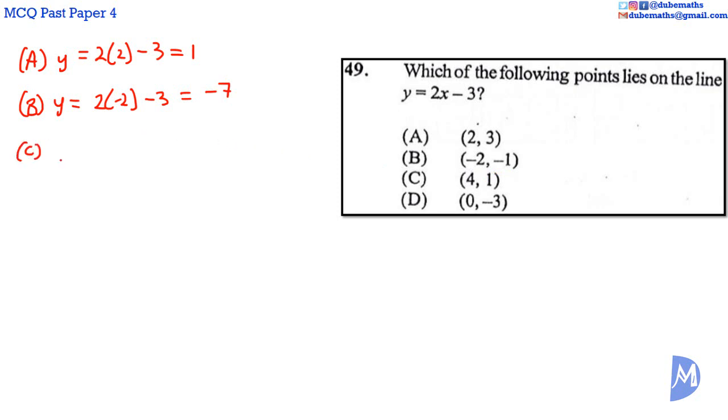C, X equals 4. So Y should equal 2 by 4 minus 3. 2 by 4 is 8. 8 minus 3 equals 5. We are given 4, 1, not 4, 5. So C is not the answer. The answer must be D.